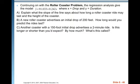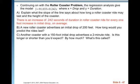Continuing on with the rollercoaster problem, the regression analysis gives the model Y-hat equals 91.033 plus 0.242X, where X equals drop and Y equals duration. Explain what the slope of the line says about how long a rollercoaster ride may last and the height of the coaster. So we're going to interpret the slope. There is an increase, because it's a positive slope, of 0.242 seconds of duration, so our Y value in rollercoaster ride, for every one foot, so one unit increase in initial drop, our X value, on average. And the on average is important, because we're not saying that it is a hard and fast rule for observations, but for our model, this is what we see happening. So it is what happens on average.